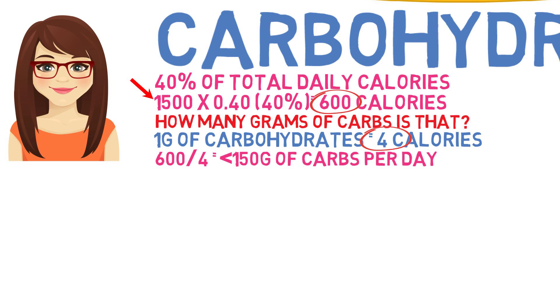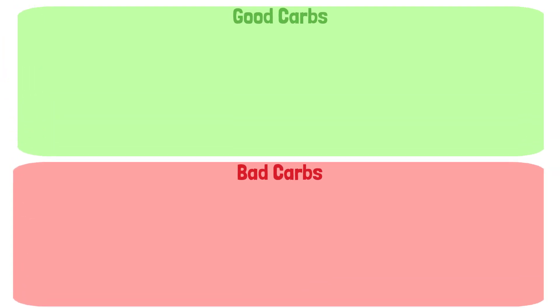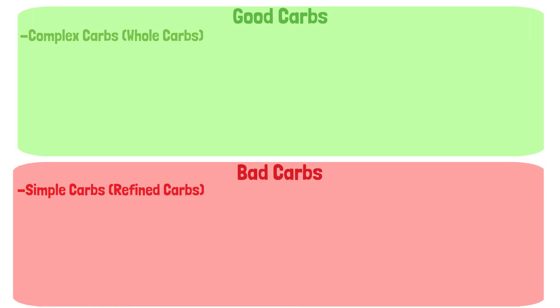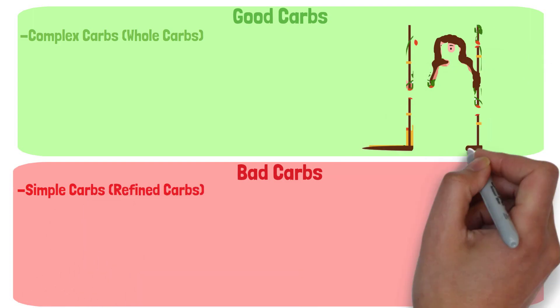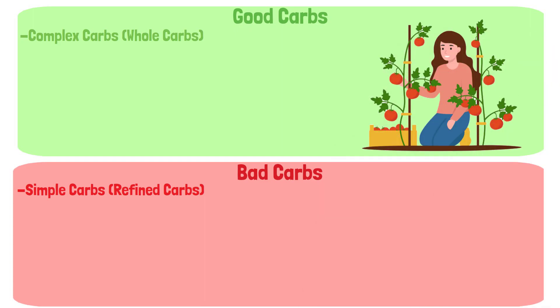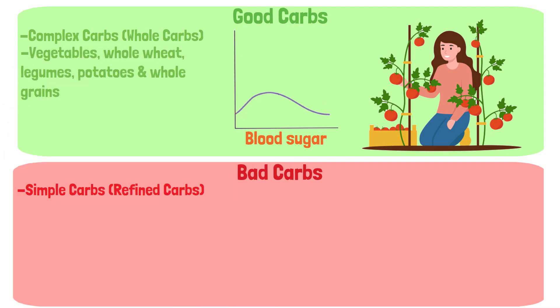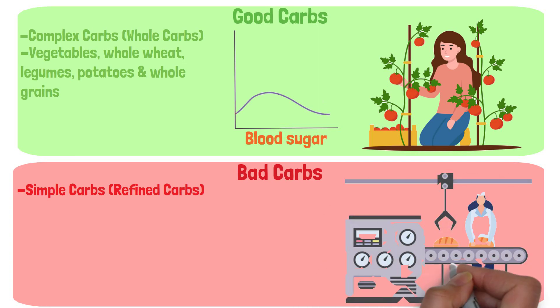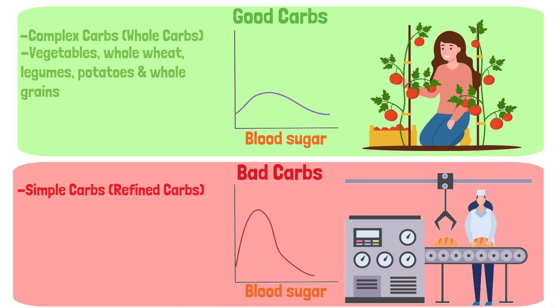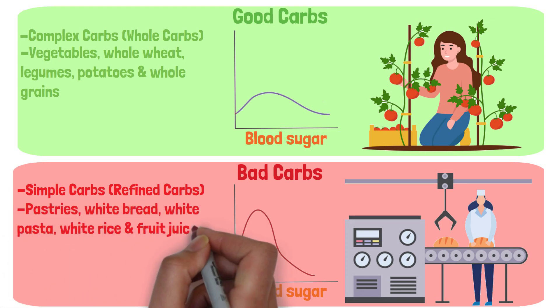Not all carbs are created equal. Good carbs are the complex carbs, sometimes referred to as whole carbs, whereas bad carbs are the simple carbs, sometimes referred to as refined carbs. Complex carbs are good because they are unprocessed, loaded with nutrients and fibre, and don't cause the same spikes and dips in blood sugar levels that lead to a crash triggering cravings for high-carb foods. Examples include vegetables, whole wheat, legumes, potatoes and whole grains. Simple carbs are processed, cause major blood sugar spikes, and are lacking in essential nutrients — which is why they are referred to as empty calories. These include pastries, white bread, white pasta, white rice and fruit juices.